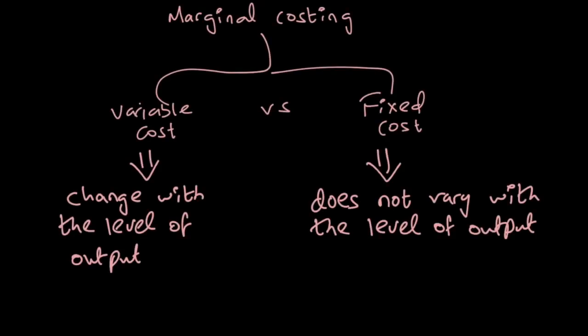Let's start off with marginal costing. Marginal costing is one view as to classify cost. Marginal costing believes that a cost can be divided as a variable cost or a fixed cost.